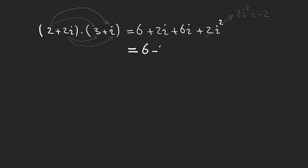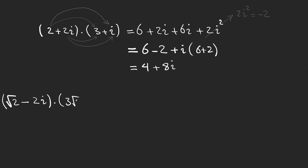We know that i squared is minus one, so two i squared is minus two. Taking care of the real part and the imaginary part, our answer is four plus eight i — the product of two complex numbers gives another complex number.